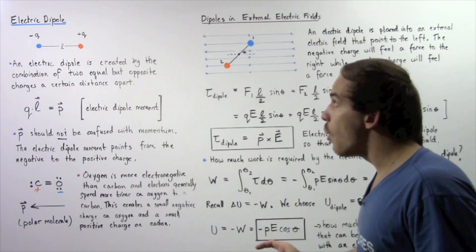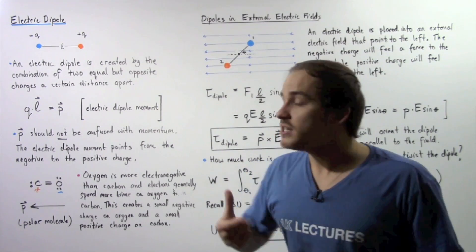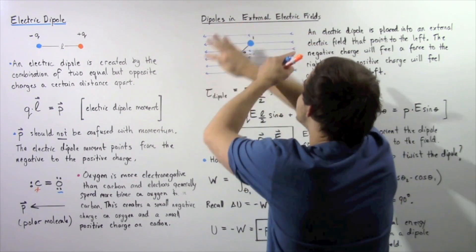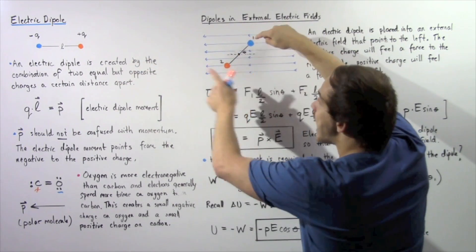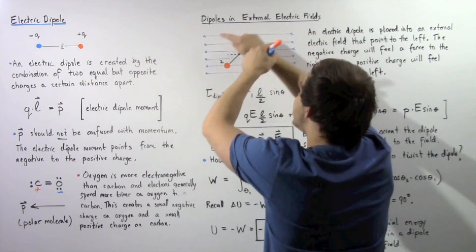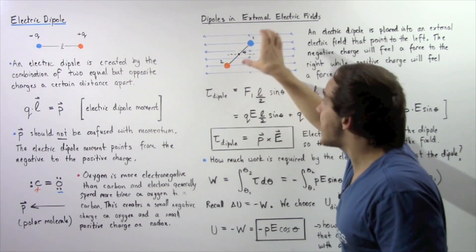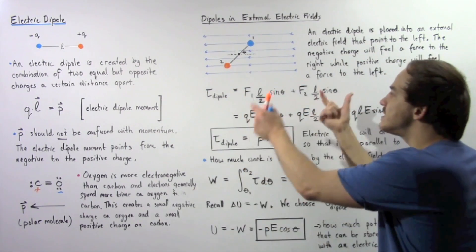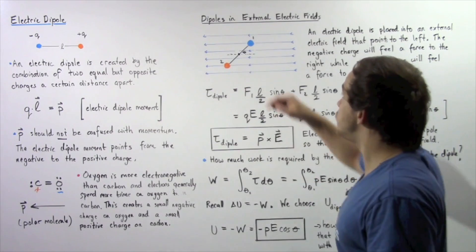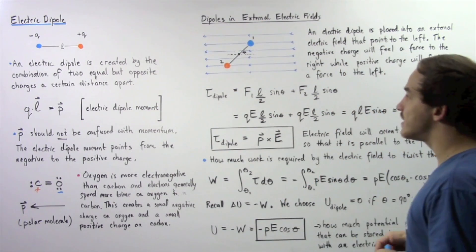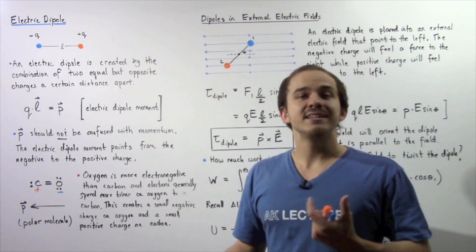Even though the net force on this electric dipole is zero, there will be a net torque. The net torque will point in the clockwise direction: one force pushes one way, the other force pushes the other way, and our electric dipole will tend to rotate clockwise. The net torque is found by summing up our two torques, which both point in the same clockwise direction, choosing clockwise as positive.